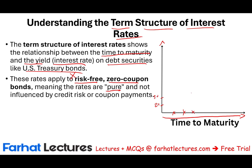A three-year bond might pay 4% — I'm making it linear but it doesn't have to be. For one, two, three years, we can graph this and see that there's an upward slope.